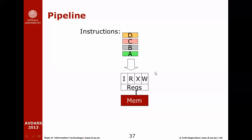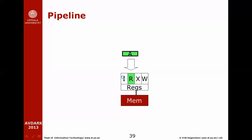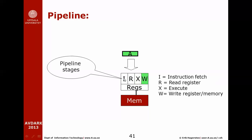As you can imagine, executing one instruction may take a long time because it has to be passed between these workers. These workers are called pipeline stages, and their special tasks are explained by their names. The first pipeline stage is the instruction fetch stage, where we fetch the instruction from memory, look at the bits that represent the instruction, and figure out what we are supposed to do with it.